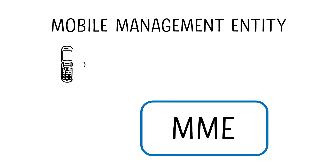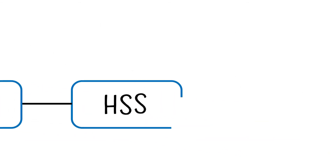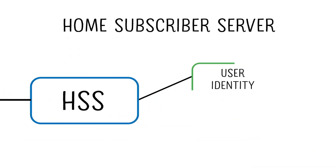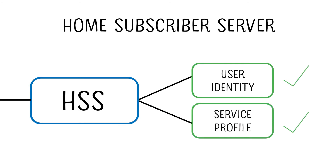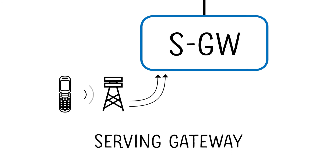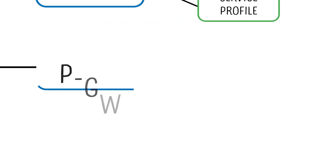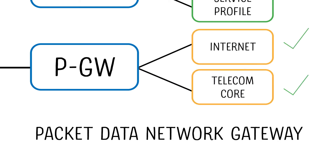The mobile management entity keeps track of the mobile phone and serves as the control plane. The home subscriber server verifies the identity of the user and establishes the service profile. The serving gateway establishes the data plane connection for traffic flow, and the packet data network gateway interfaces to external networks.